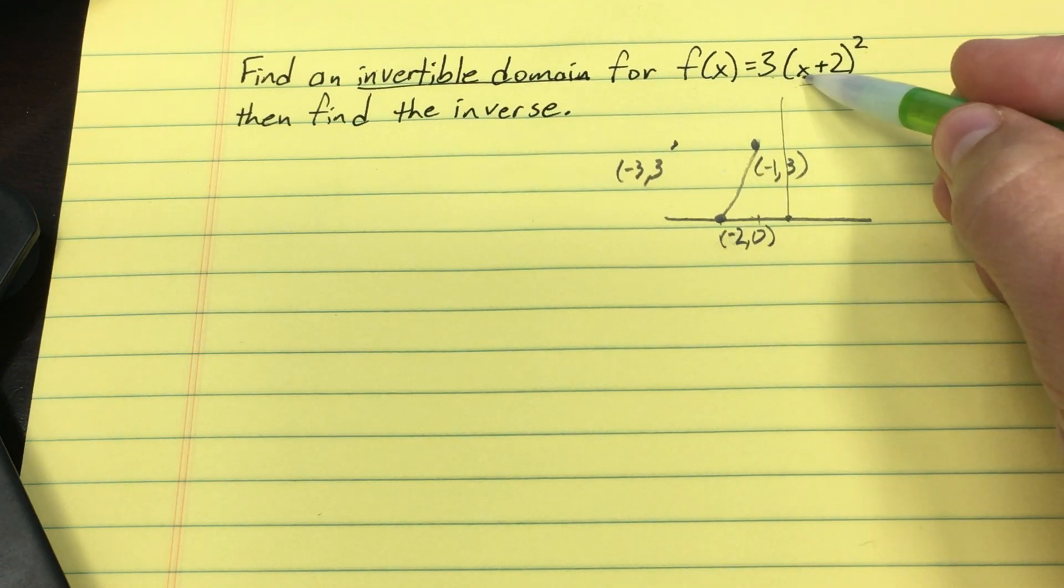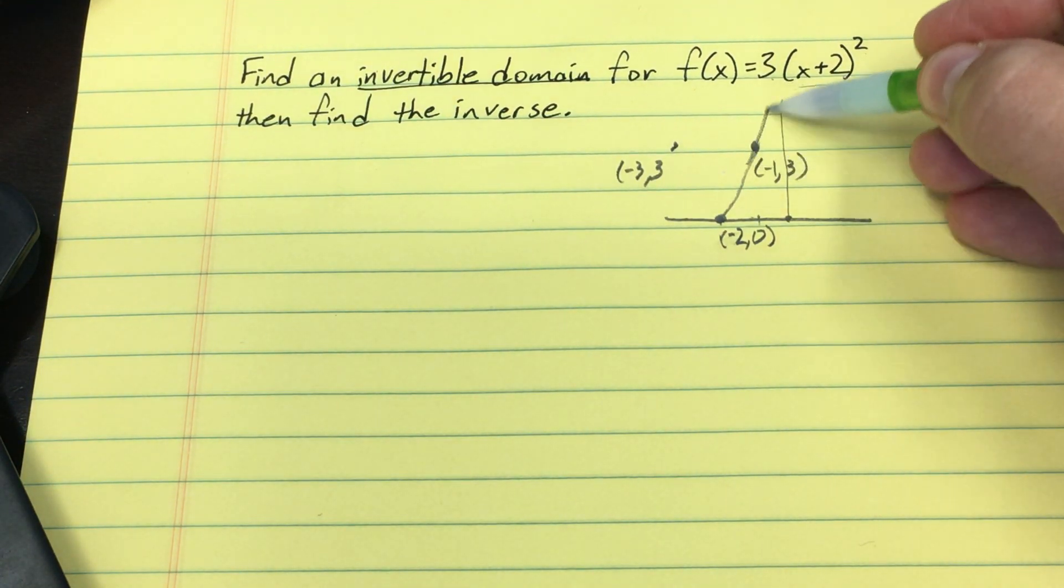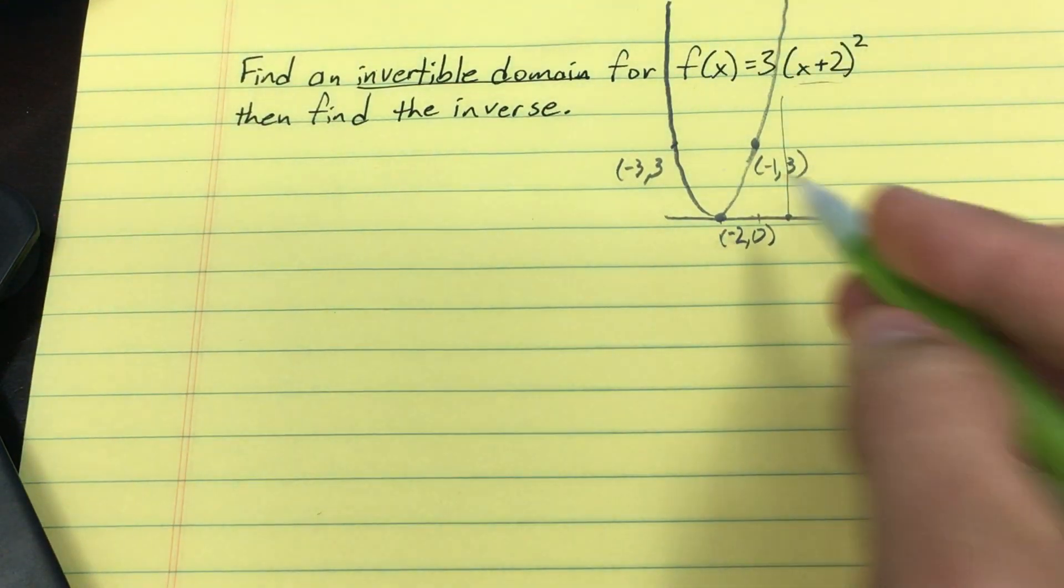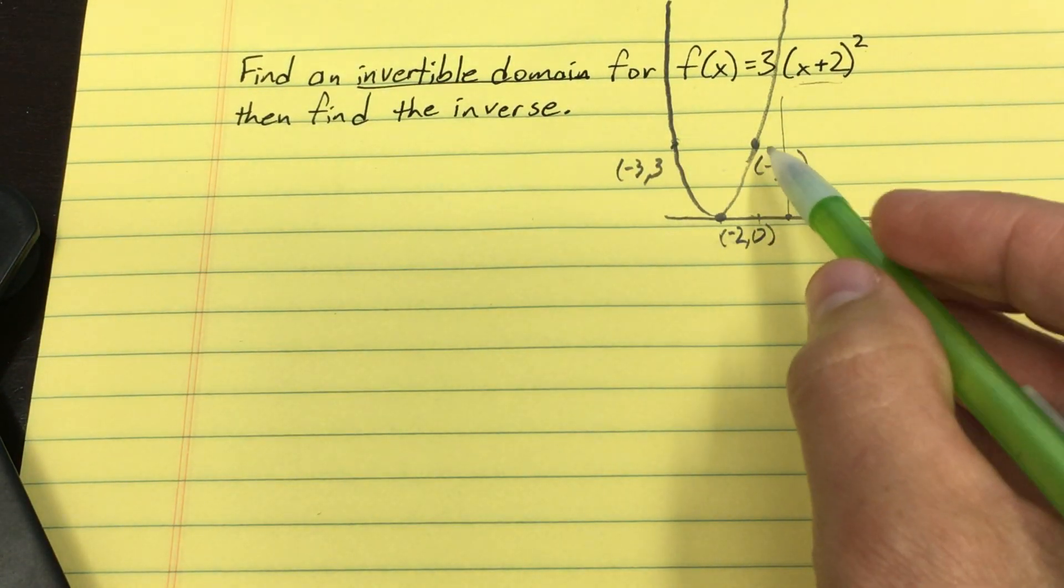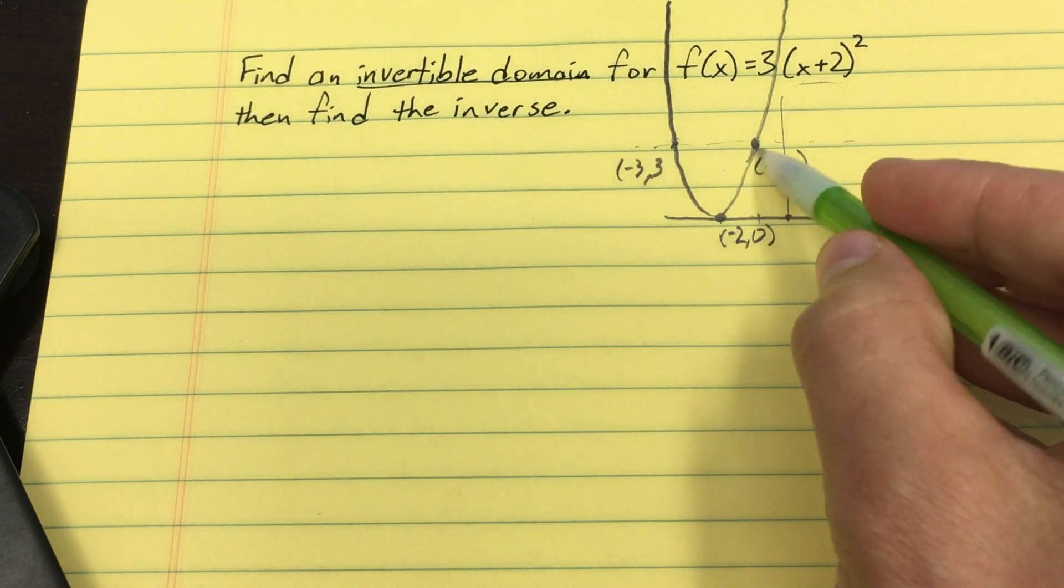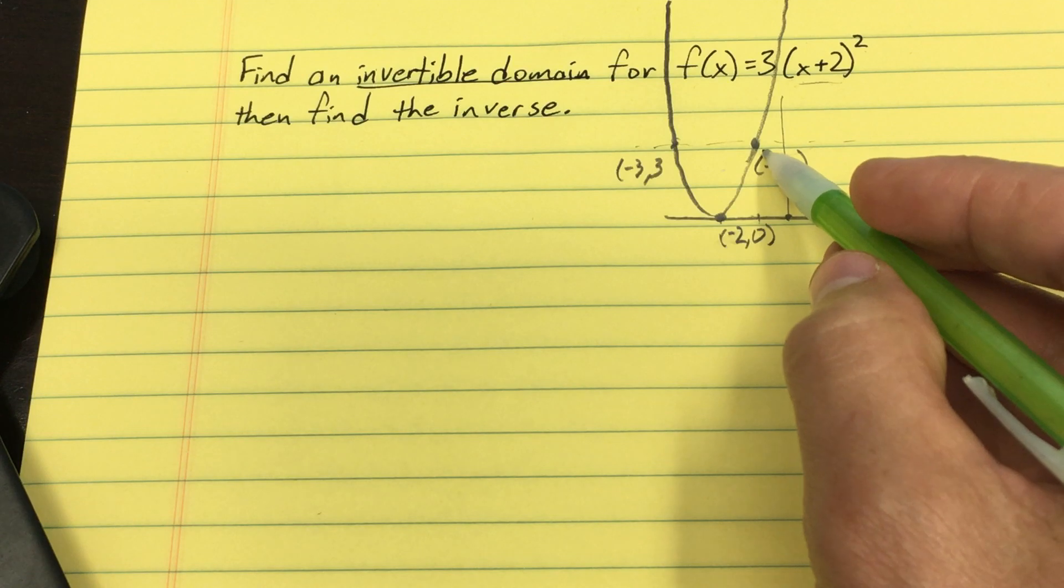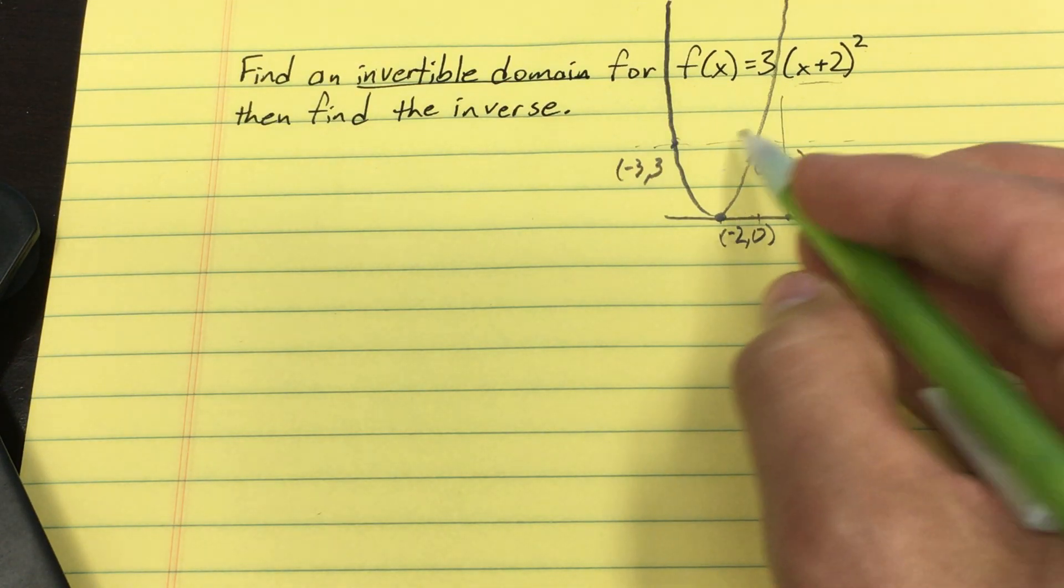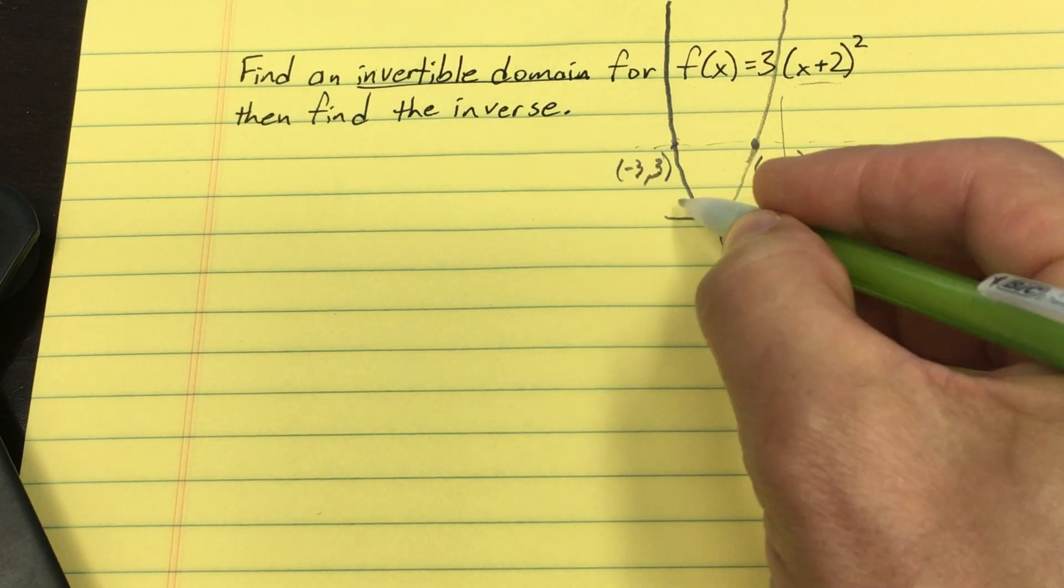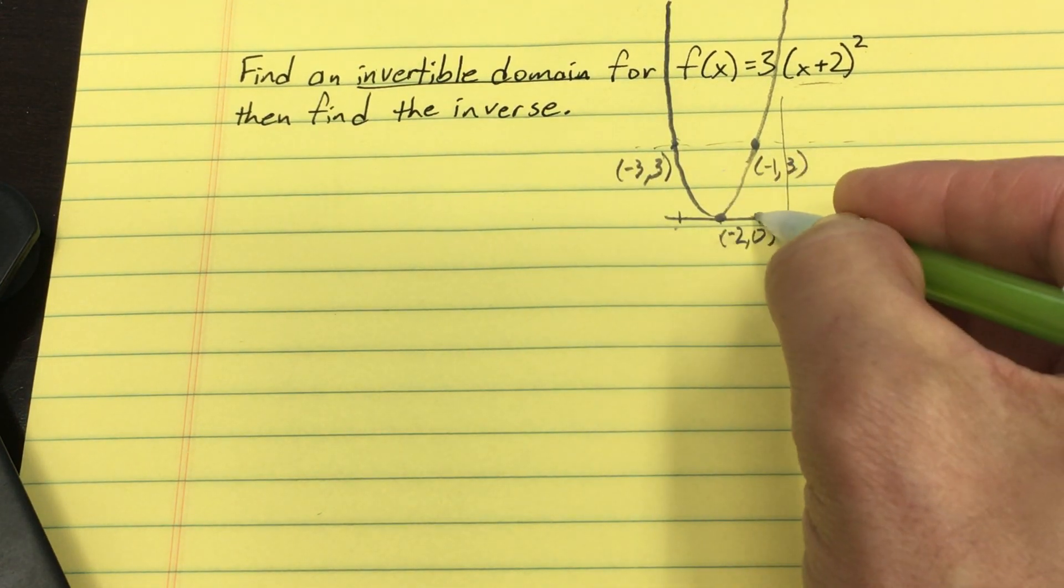I think the y-intercept would be something like 12, so (0,12) it goes through. Well, clearly this doesn't pass the horizontal line test. It doesn't have one output that's unique for every input. If your output was, say, 3, I wouldn't know which point you started at, -3 or -1.